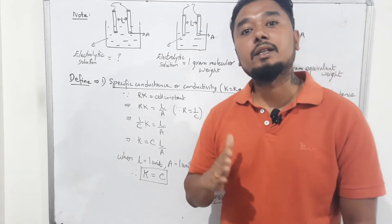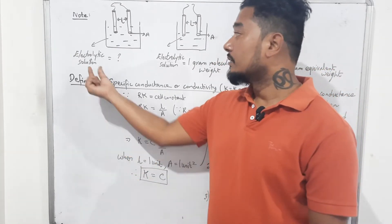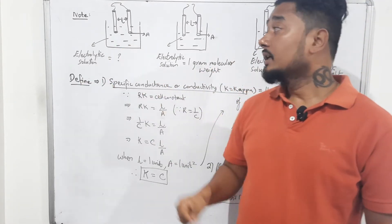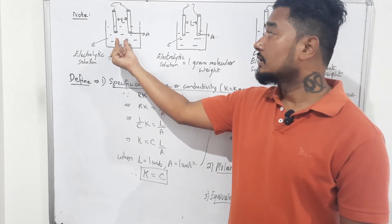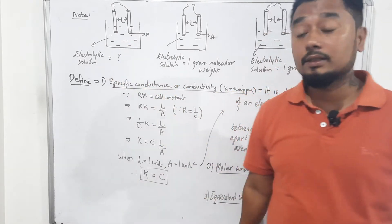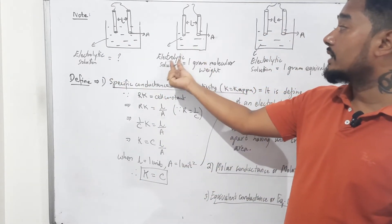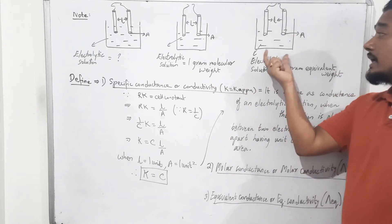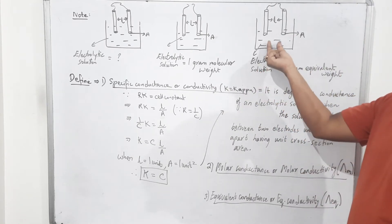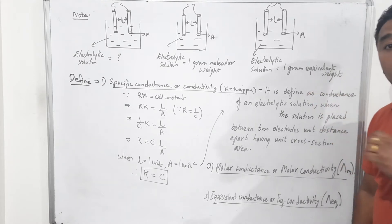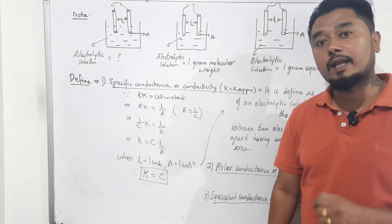The electrolytic cell conducts electricity through movement of ions. As I said in the first class, metallic conductors conduct electricity through movement of electrons, whereas electrolytic solutions conduct electricity through movement of ions. Now, in the first picture I am not mentioning the quantity of solution, but in the second I am saying 1 gram molecular weight has been taken, and in the third, 1 gram equivalent weight.